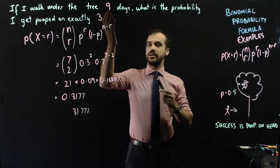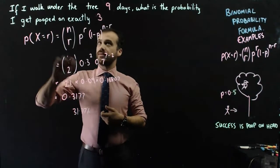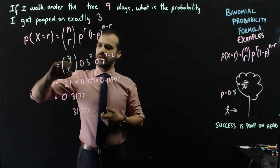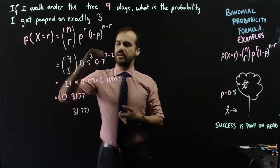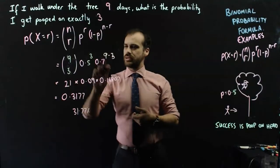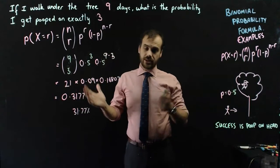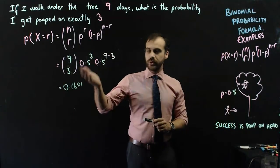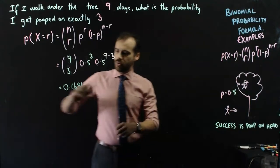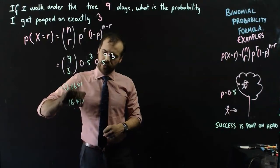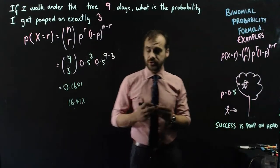So 9 coin flips, 3 successes. That should be 9, and that should be 3, and this should be 0.5, and this should be 3, and this should be 9, and that should be 3, and this should be also 0.5. I can put that into my calculator and get a different answer. If I flip the coin 9 times, there is a 0.1641 chance, or 16.41% chance that I'll get exactly 3 heads or 3 tails, depending on which one you thought success was.